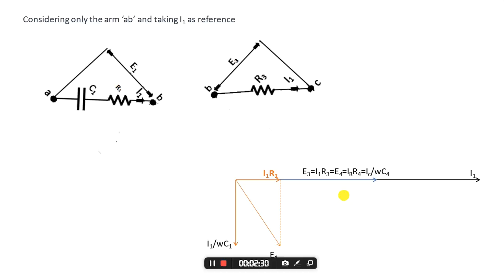Now, if you recall the circuit diagram, it is given that E1 plus E3 will be equal to E, where E is the supply voltage. If we complete the parallelogram, the resultant of these two vectors will give us the total supply voltage E.